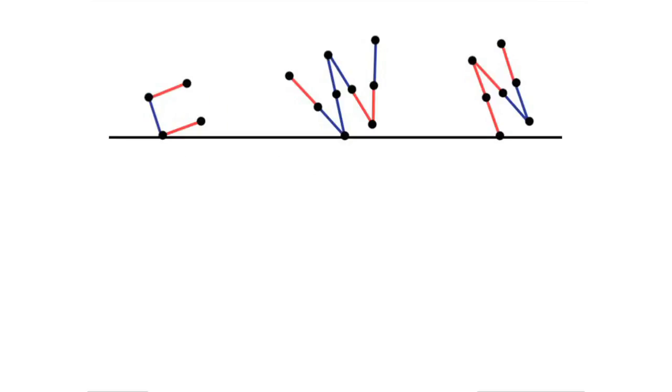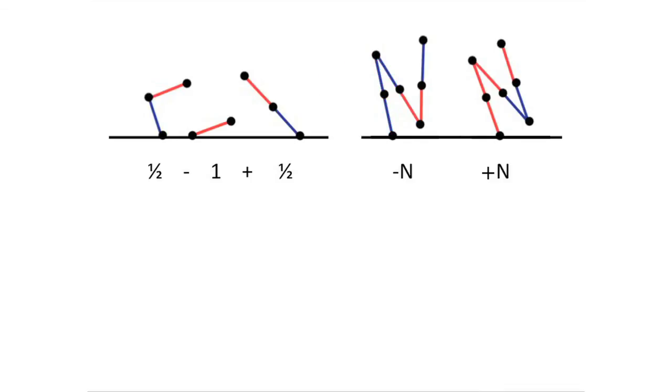Returning to our earlier position, which consisted of a baby c plus w plus n, we see that its value must be zero because it is the sum of zeros.